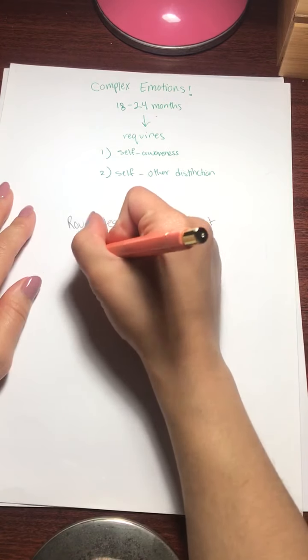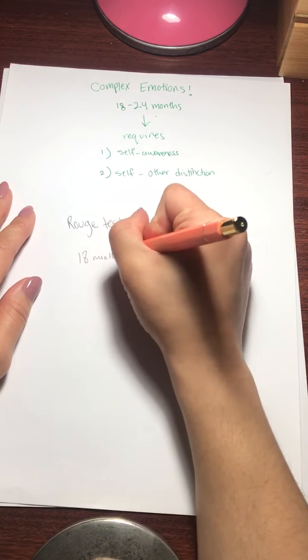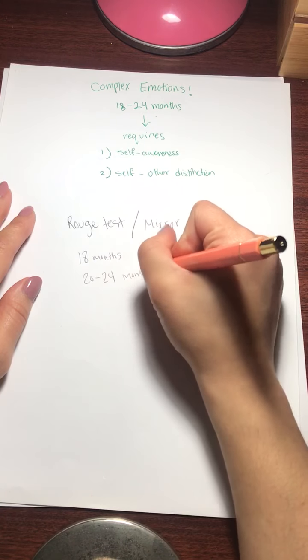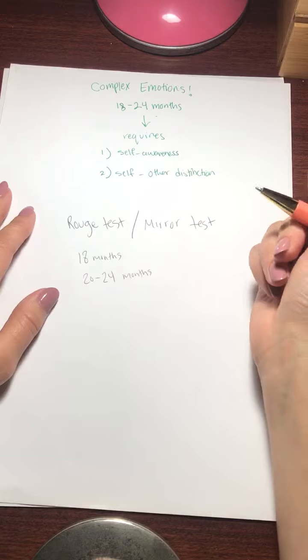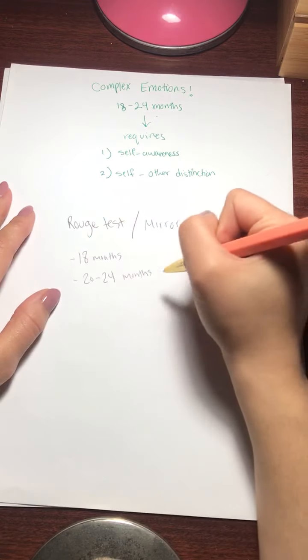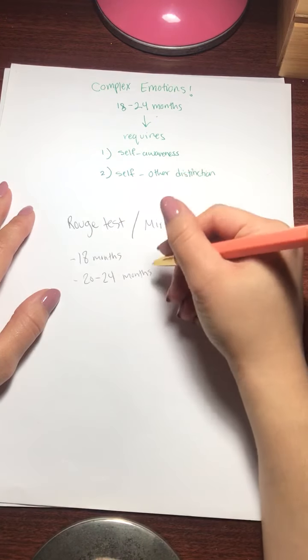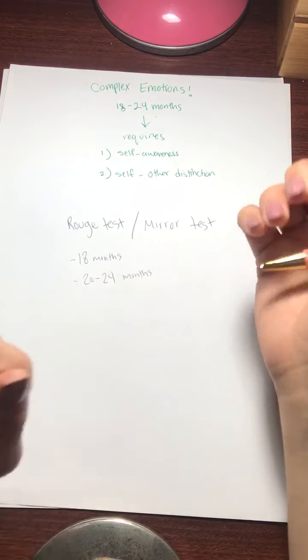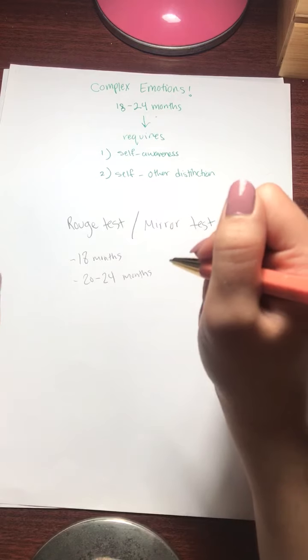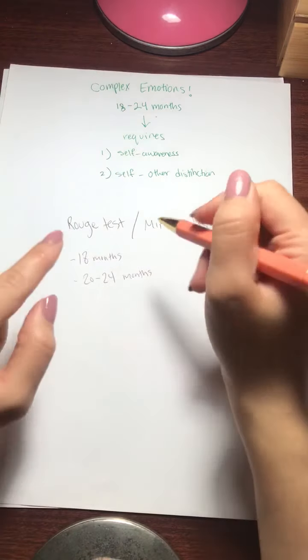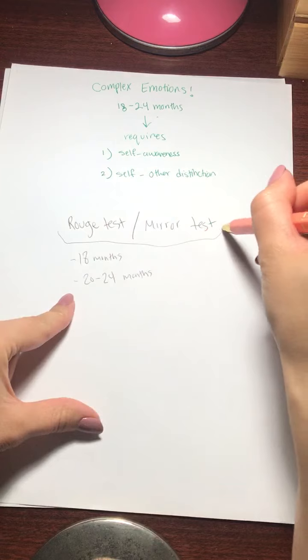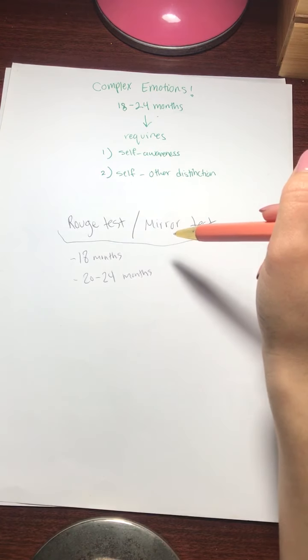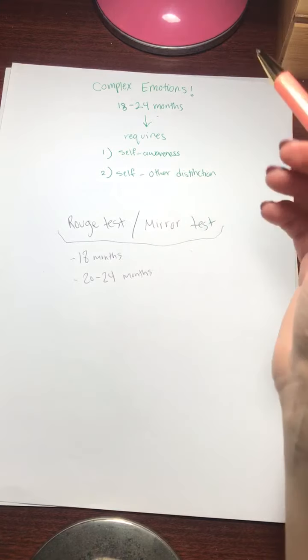And so that's by 18 months and by about 20 to 24 months, they should be actually, they should be able to notice that the person in the mirror is the same as themselves and they become they're self-aware and they can wipe that red dot off of their own face. Instead of reaching to the mirror, it's worth checking out this test because you start to see that a lot of animals are self-aware as well. So it's a cool thing to look up and look into.